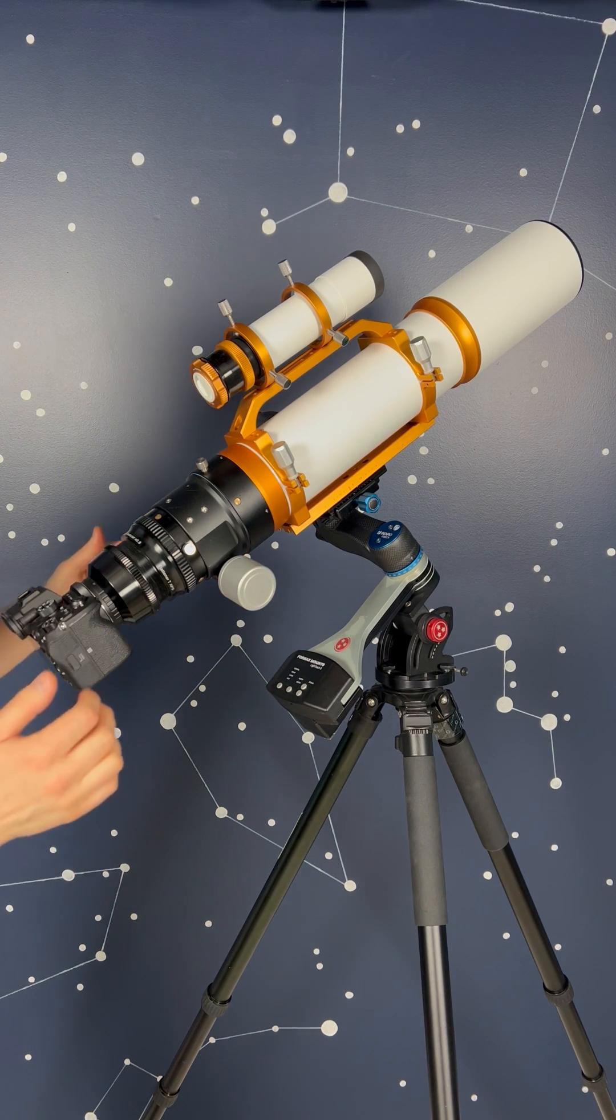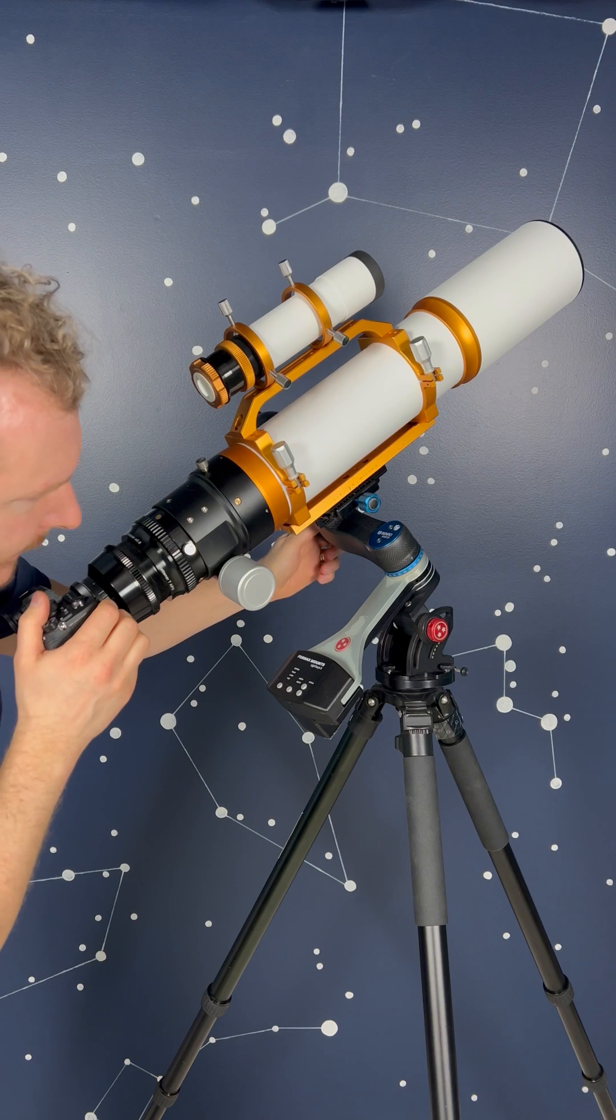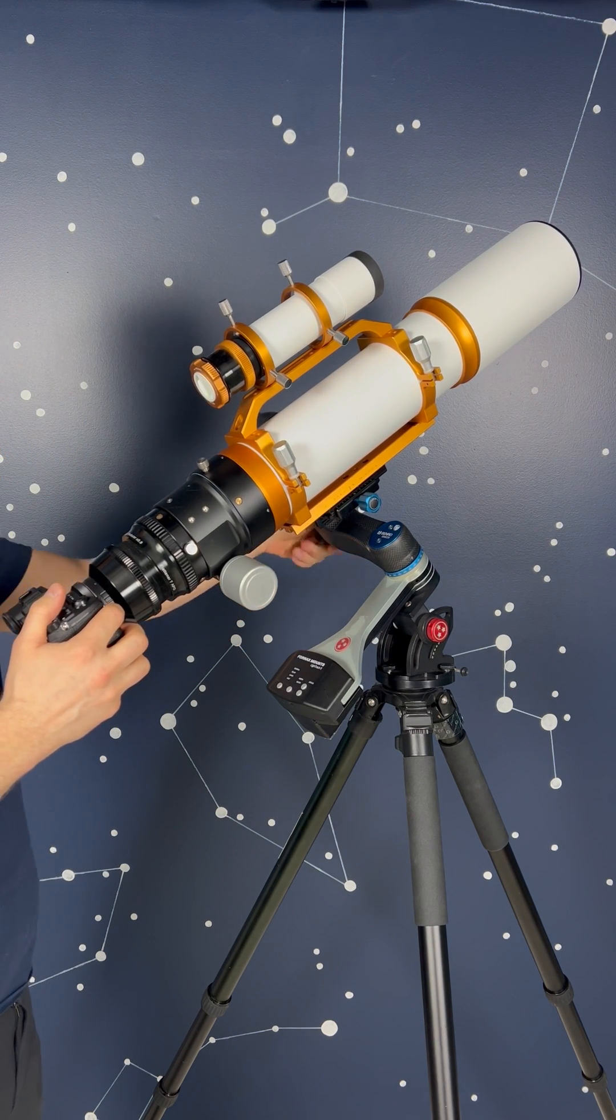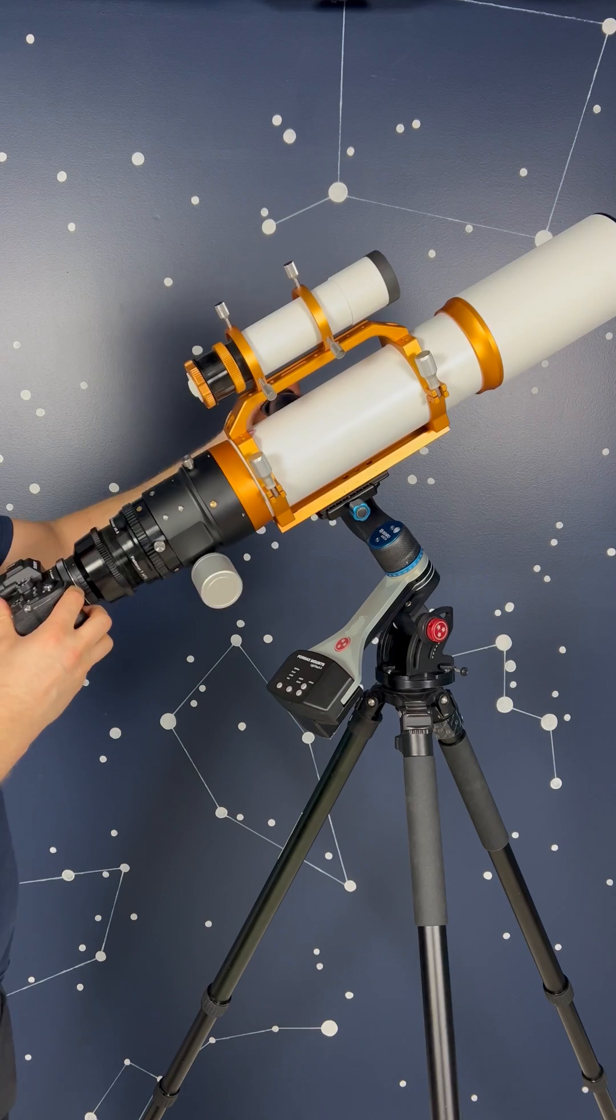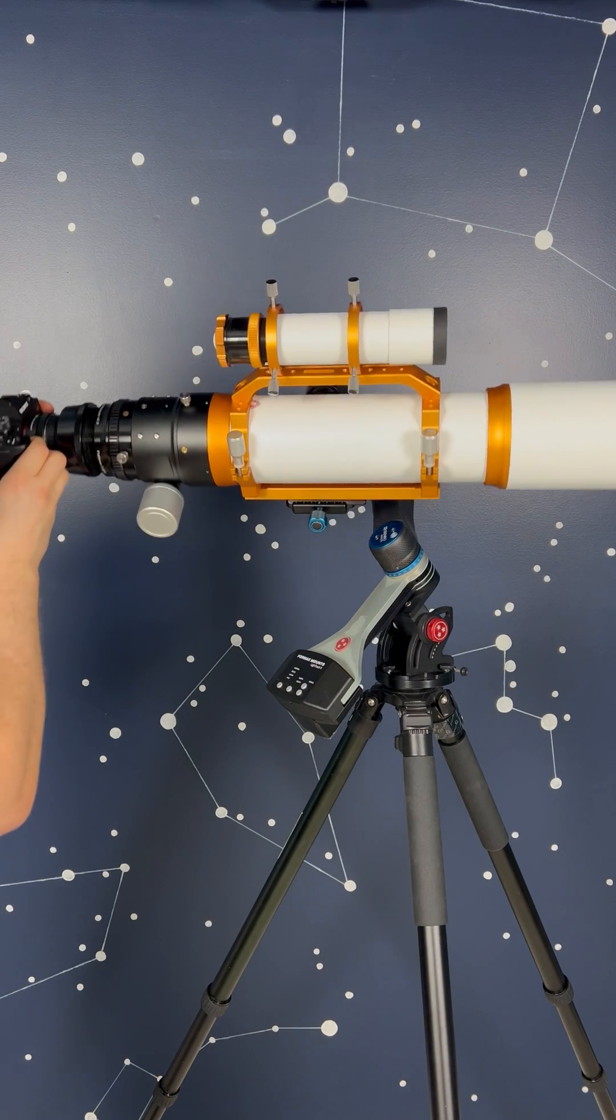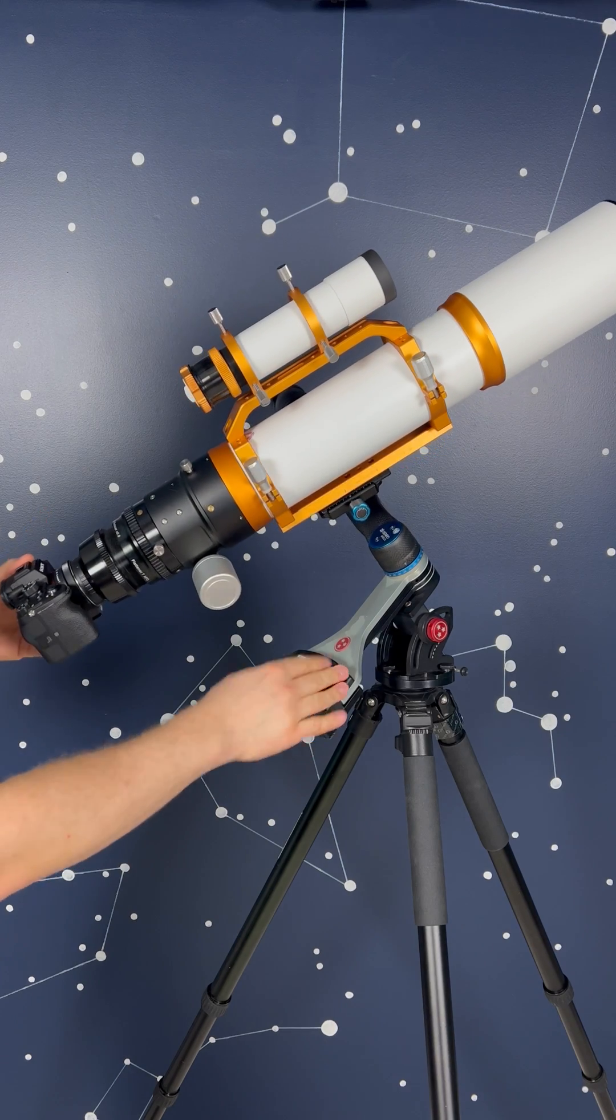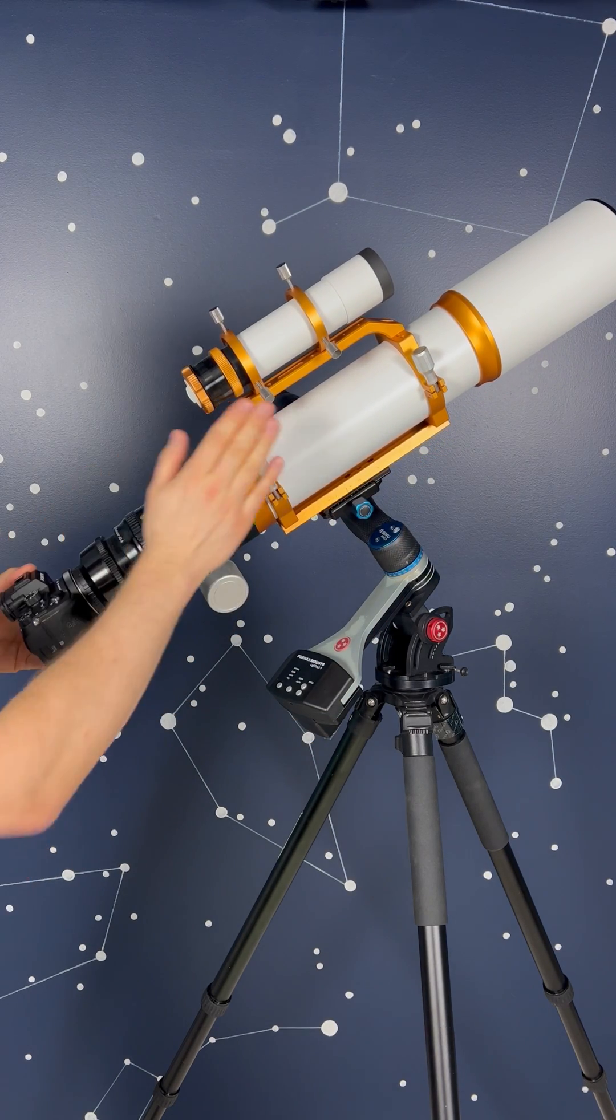This is pretty interesting, just got it in the mail. This is the Benro GH5C gimbal, it's carbon fiber, and I've got it mounted on the Fornax LighTrack 2 with the Sony camera attached.